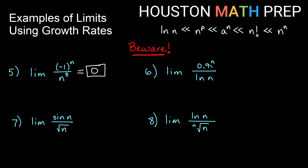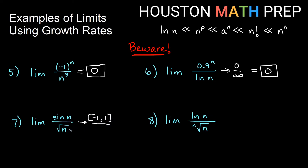Similarly, the limit of 0.9^n over ln(n): you might think this is exponential over logarithmic, but 0.9 is less than 1, so repeatedly multiplying by 0.9 gives a smaller number, not a larger one. The top actually goes to zero, and the bottom goes to infinity. So zero over infinite growth gives a limit of zero. For the limit of sin(n) over √n: sin(n) always stays between −1 and 1, while the denominator grows infinitely large. Dividing bounded values by something growing to infinity gives a limit of zero.